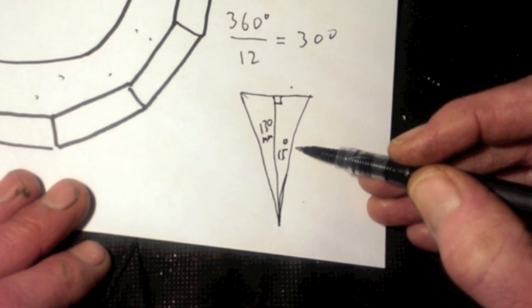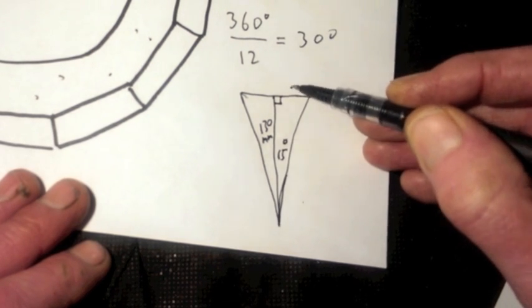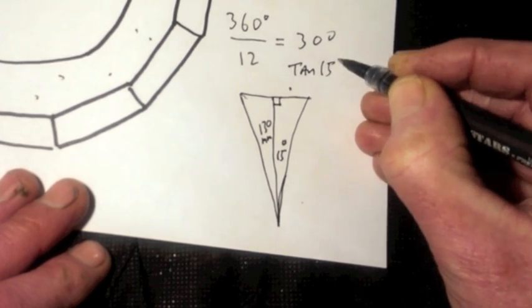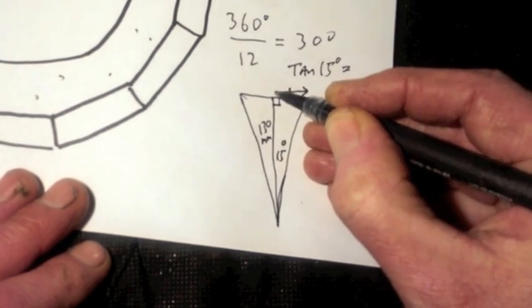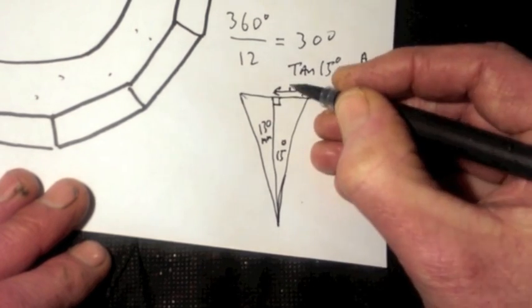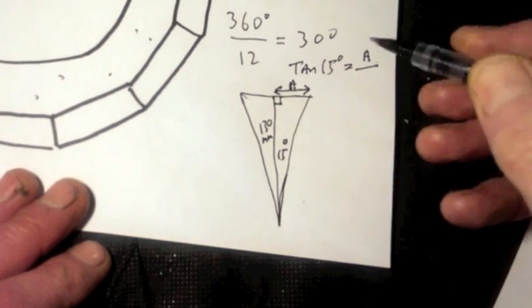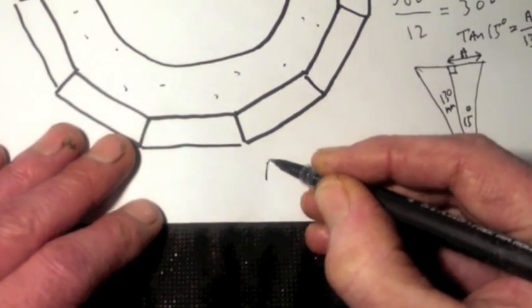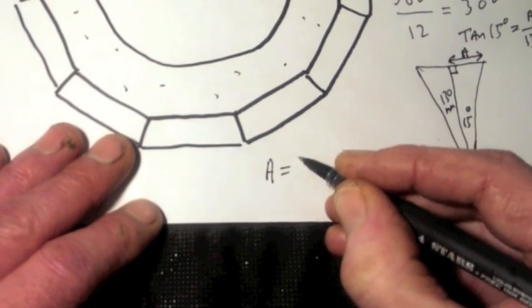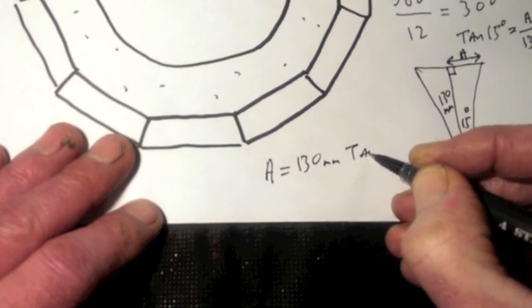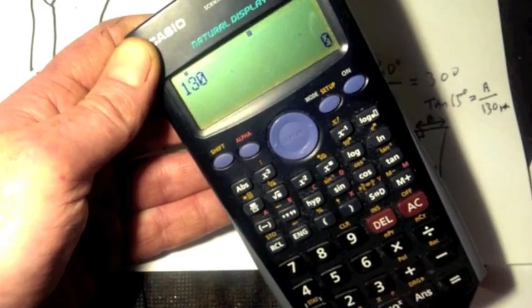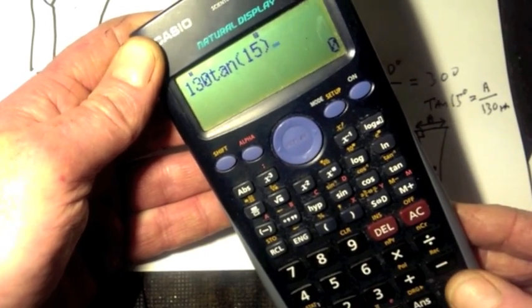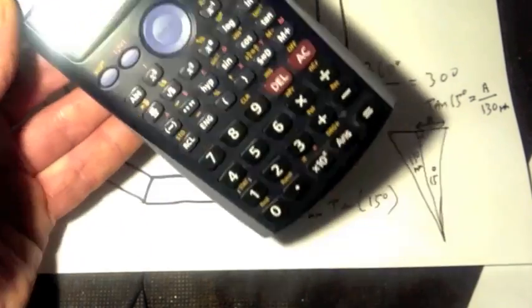And because we know the angle and the length of one side we can calculate another side. If you remember your trig functions from school, we've got an angle and we want the length of the side opposite it, and we know the side adjacent to it, so the one we need is tangent. So the tangent of 15 degrees is the distance of the side opposite 15 degrees, which is our unknown, we'll call it A, divided by the distance of the adjacent side which we know to be 130 millimeters. So to get A, if you rearrange that, half the length of our side is 130 millimeters times the tangent of 15 degrees. 130 times the tangent of 15 degrees gives us 34.8, so we'll call that 35.